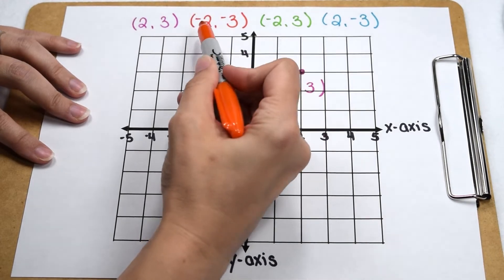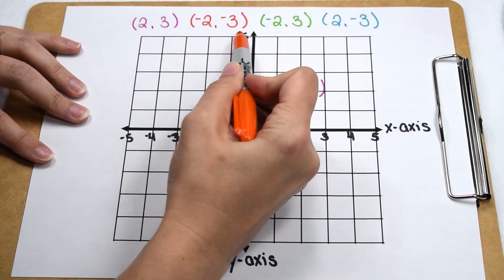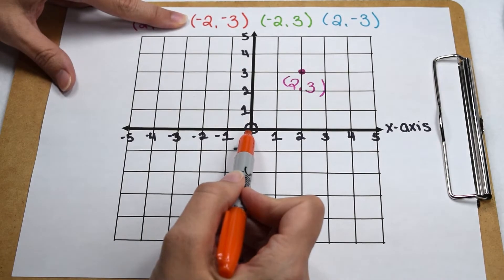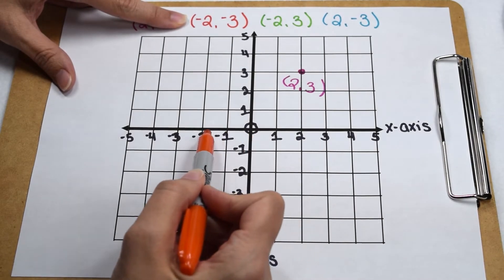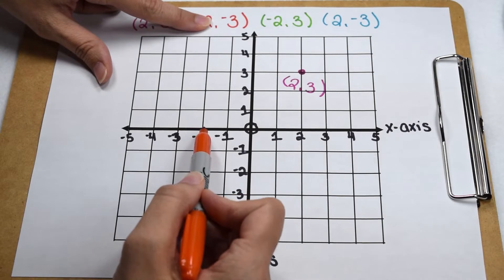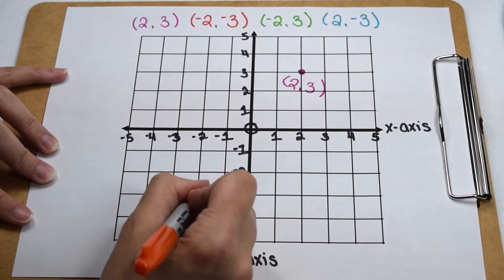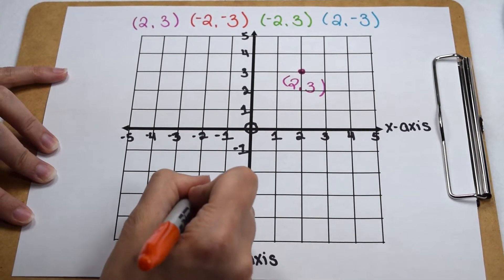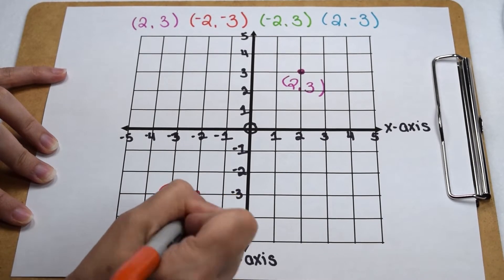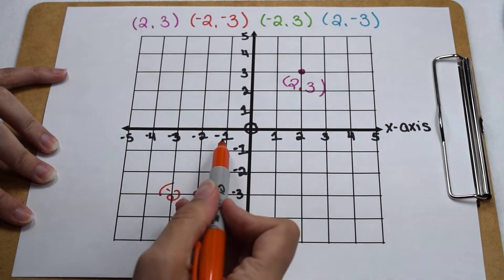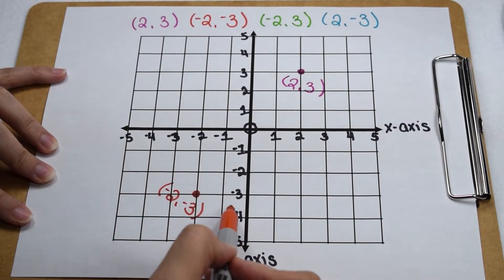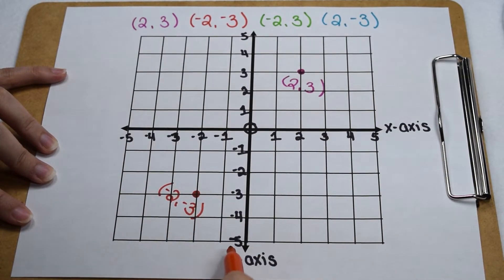For our next point, we're going to plot (-2,-3). To plot the x-coordinate of negative 2, I start at my origin and go two places to the left. To plot my negative 3, I need to go down three places. When I plot the point (-2,-3), I notice that I'm in quadrant 3. All x-values in quadrant 3 are negative, and all y-values in quadrant 3 are also negative.